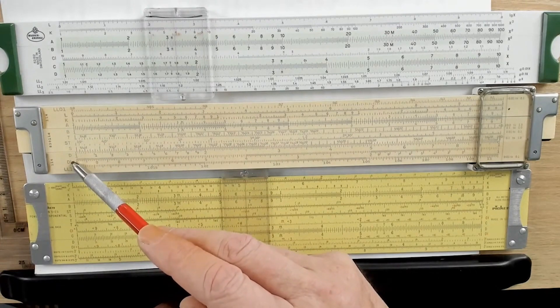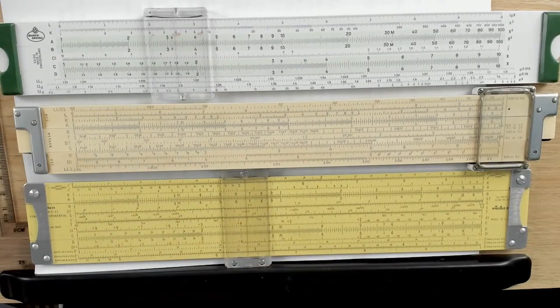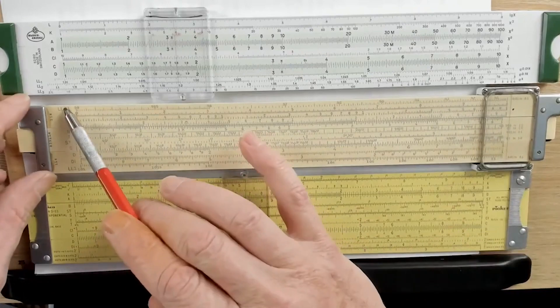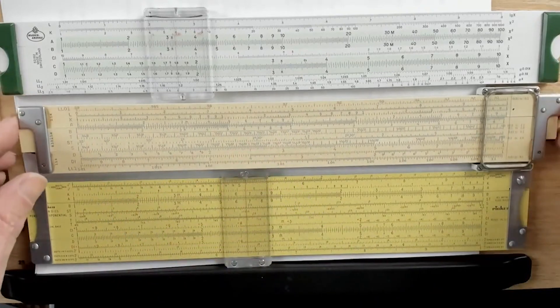You can invert the C scale. You can invert the D scale. You can even invert some of these other ones, the A and the B. Now, you'll also see something called an LL scale on it. Those are log-log scales. We'll go over those in a minute.